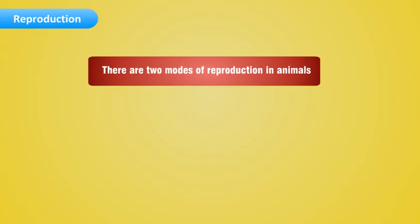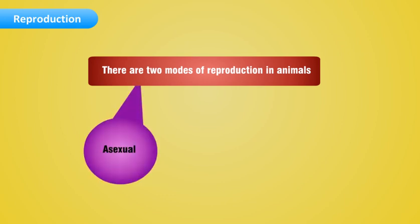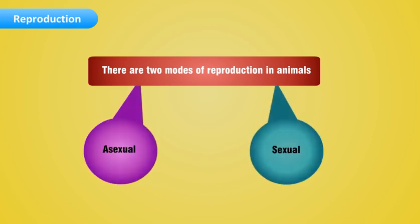There are two modes of reproduction in animals: asexual and sexual.